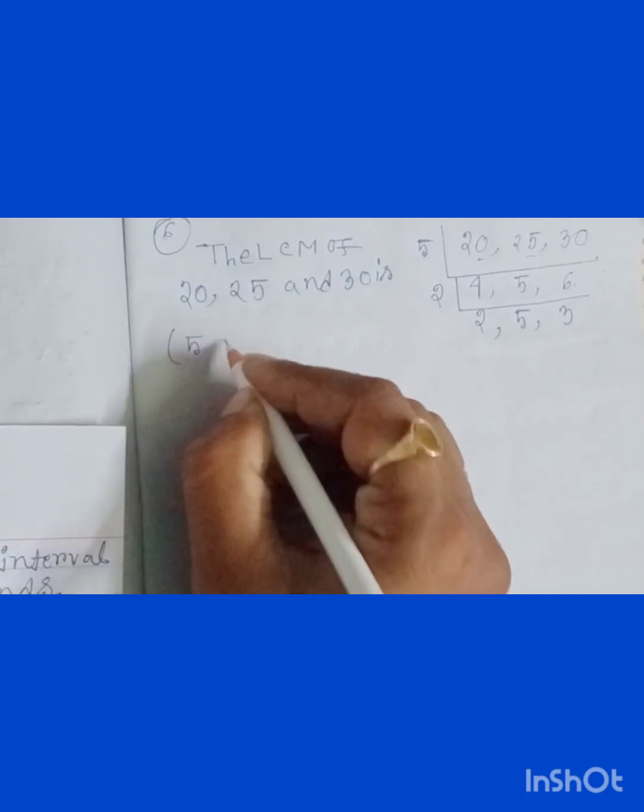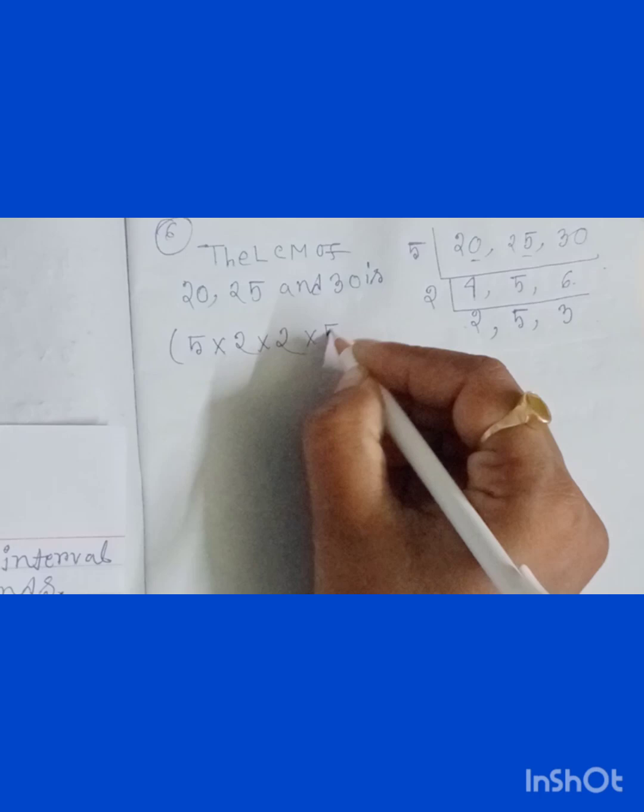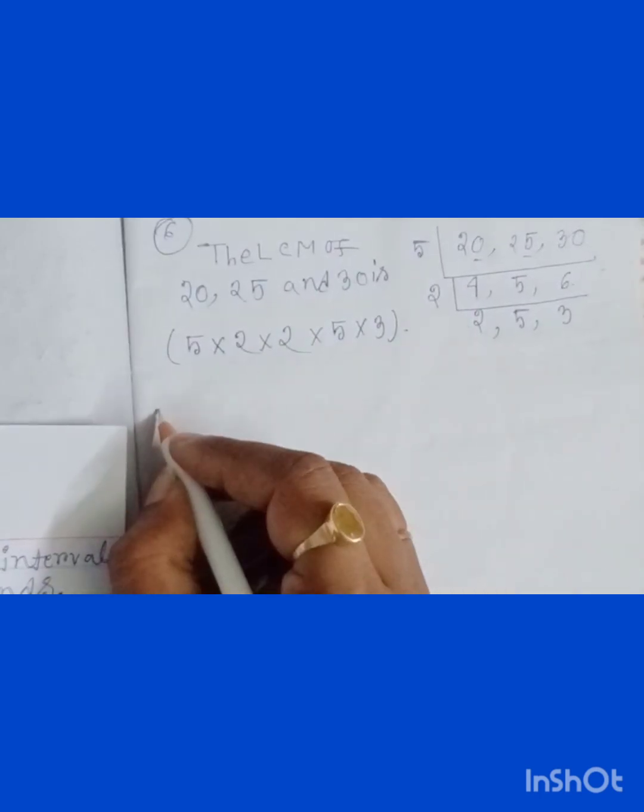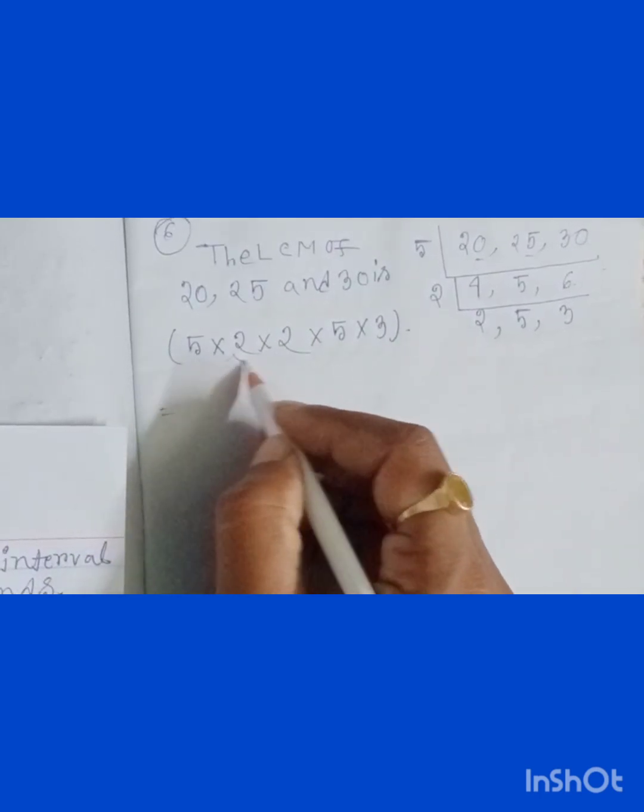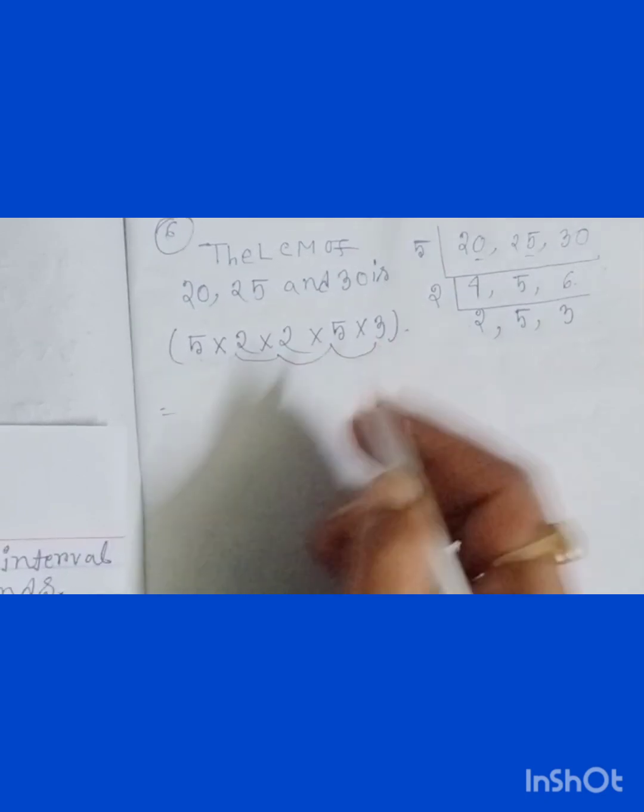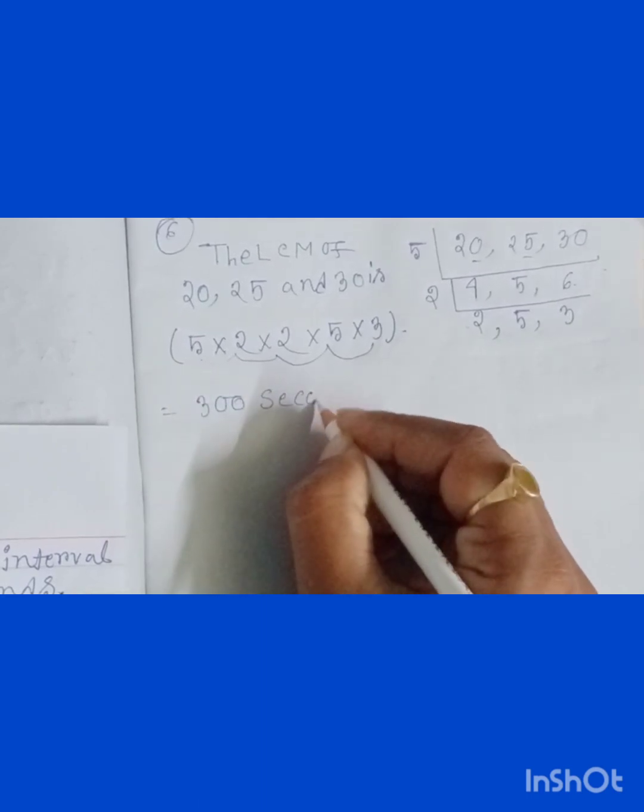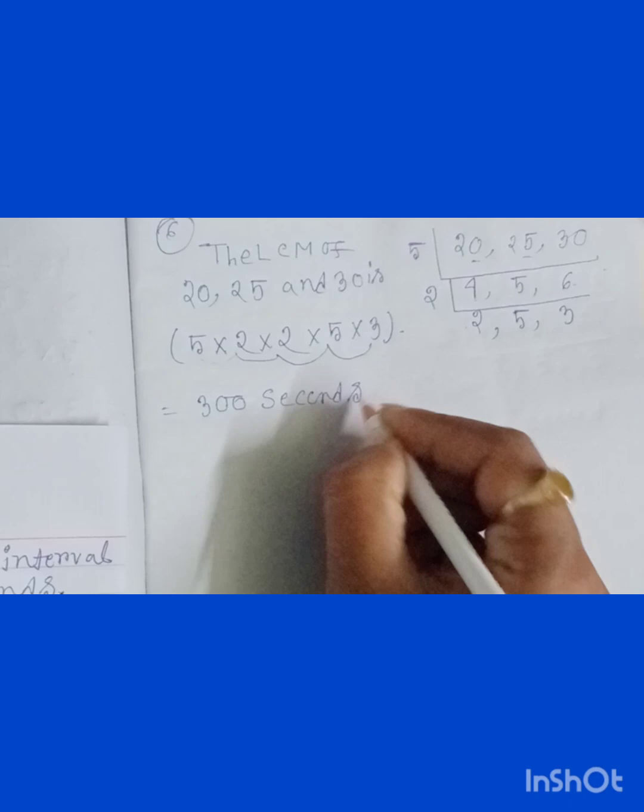5 times 2 times 2 times 5 times 3. Then what will be the product? 5 times 2 is 10, 10 times 2 is 20, 20 times 5 is 100, 100 times 3 is 300. So 300 seconds. So student, here you have to convert these seconds into minutes.